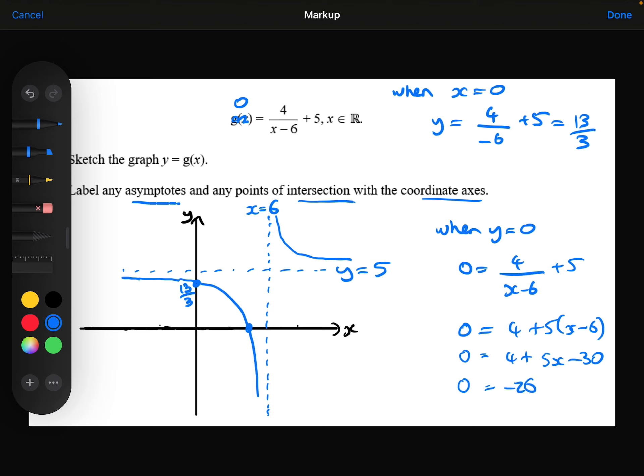The 4 minus the 30 is minus 26. Add the 26 to both sides, divide by 5. So we get x is 26 over 5. That's my x-intercept.